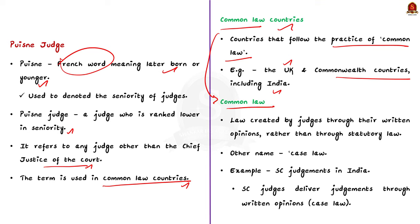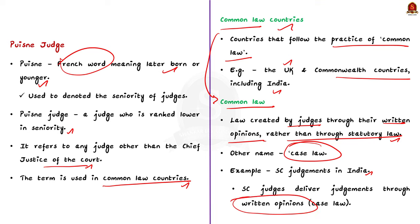Those countries which follow the practice of common law are called common law countries. The United Kingdom and the Commonwealth countries, including India, are referred to as common law countries. Common law refers to the law that is created by judges through their written opinions rather than through statutory law. The common law is also called case law. In India, for example, the Supreme Court judges deliver their judgments through written opinions, and those judgments have the force of law.